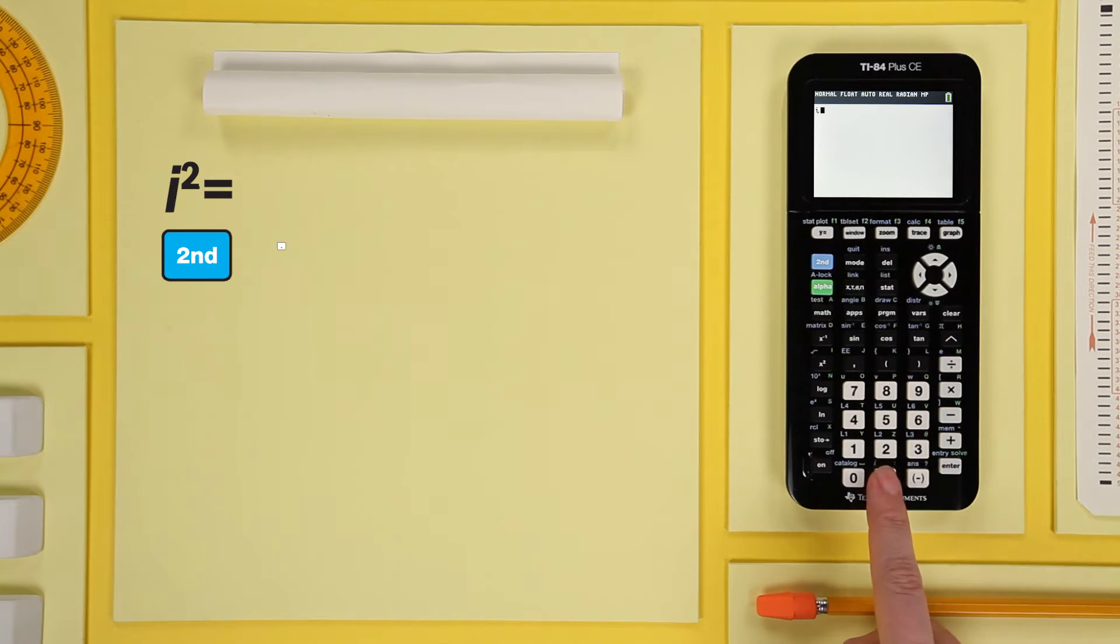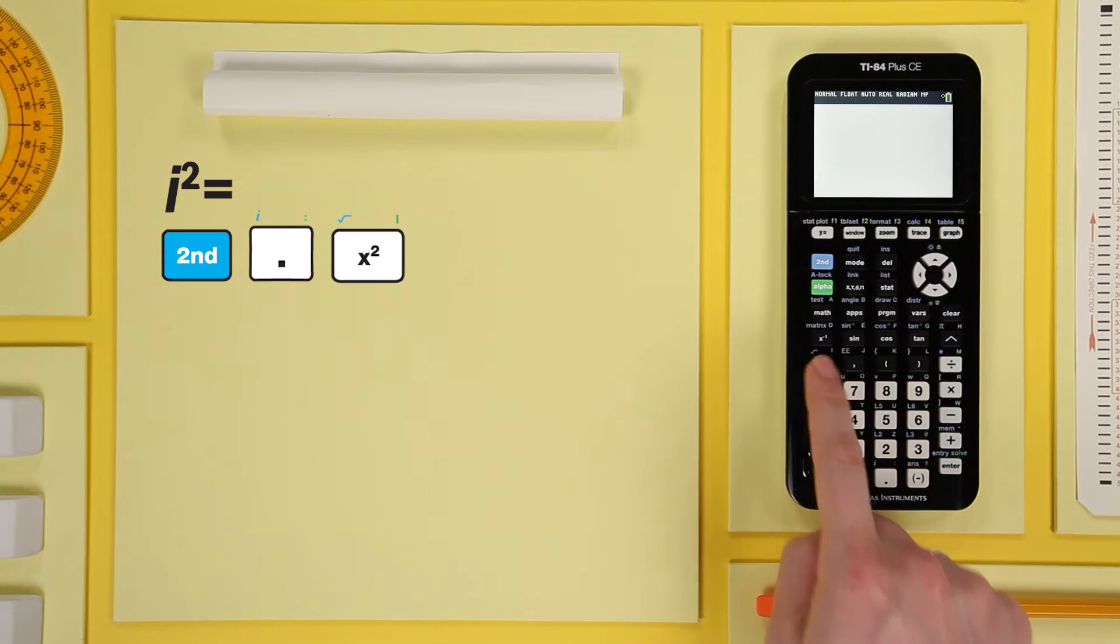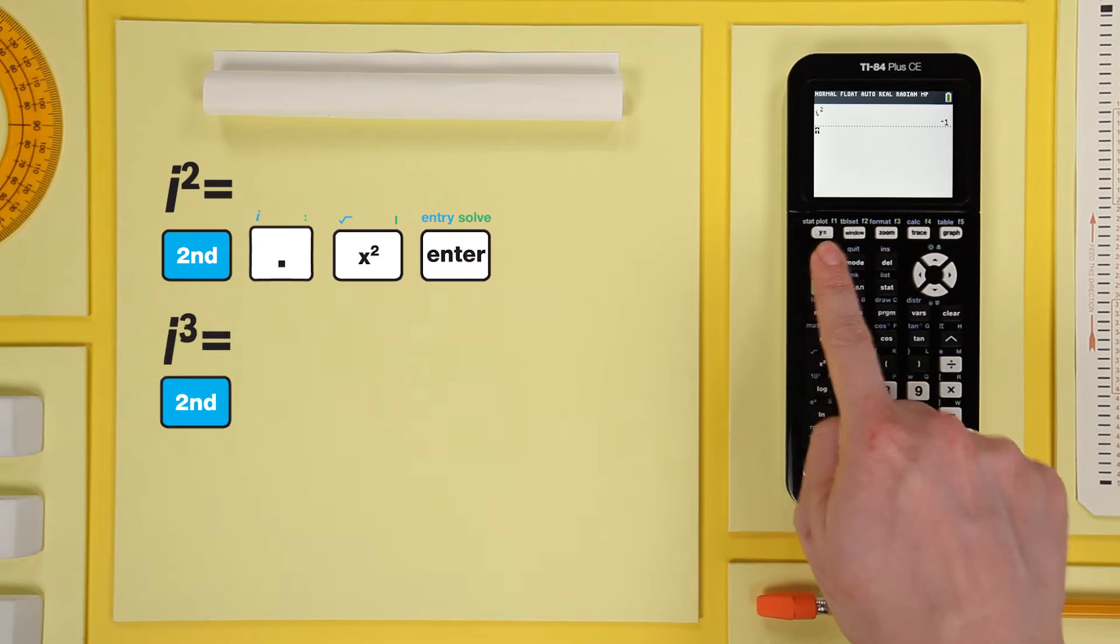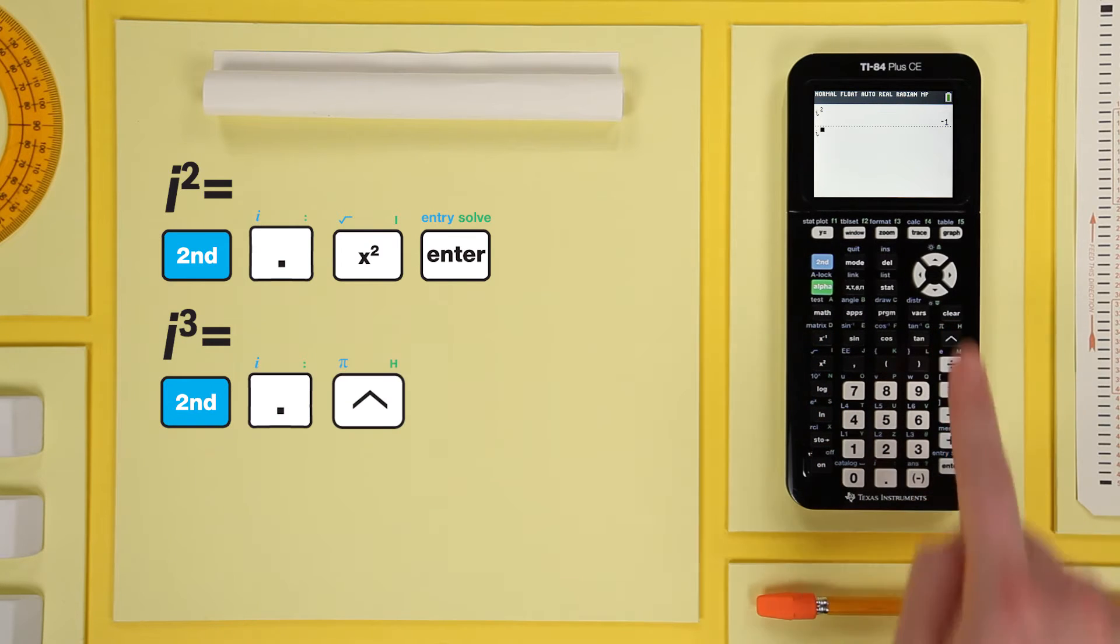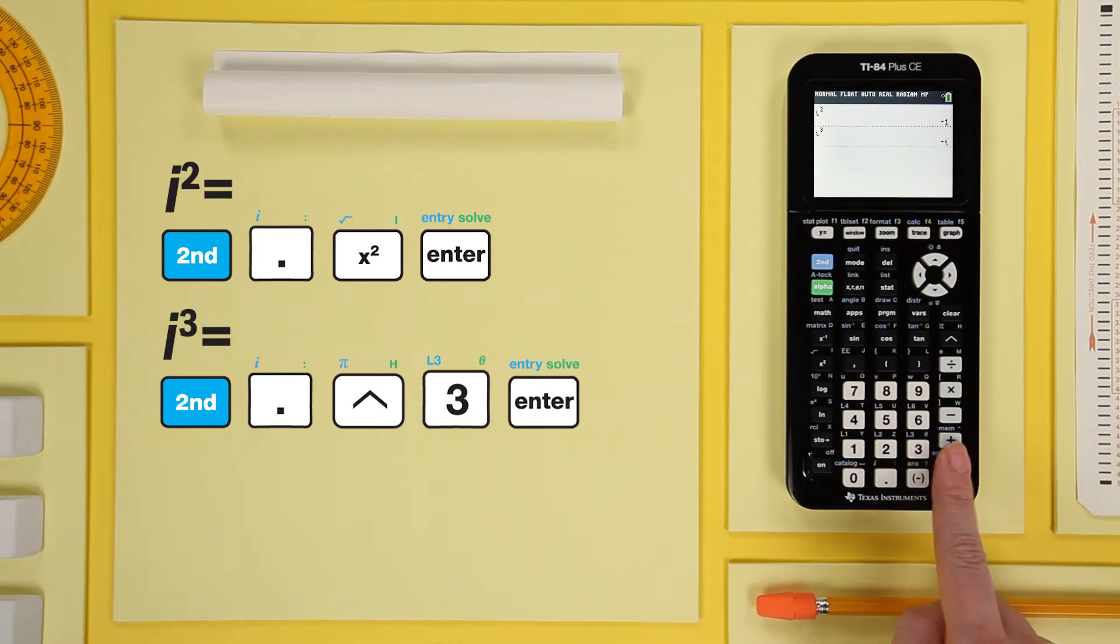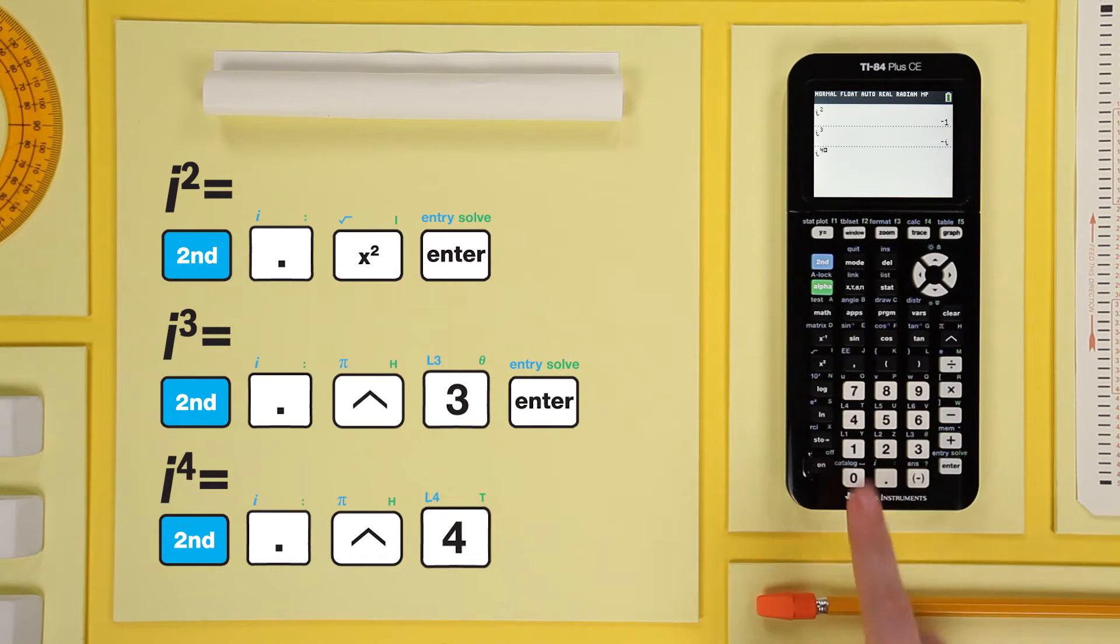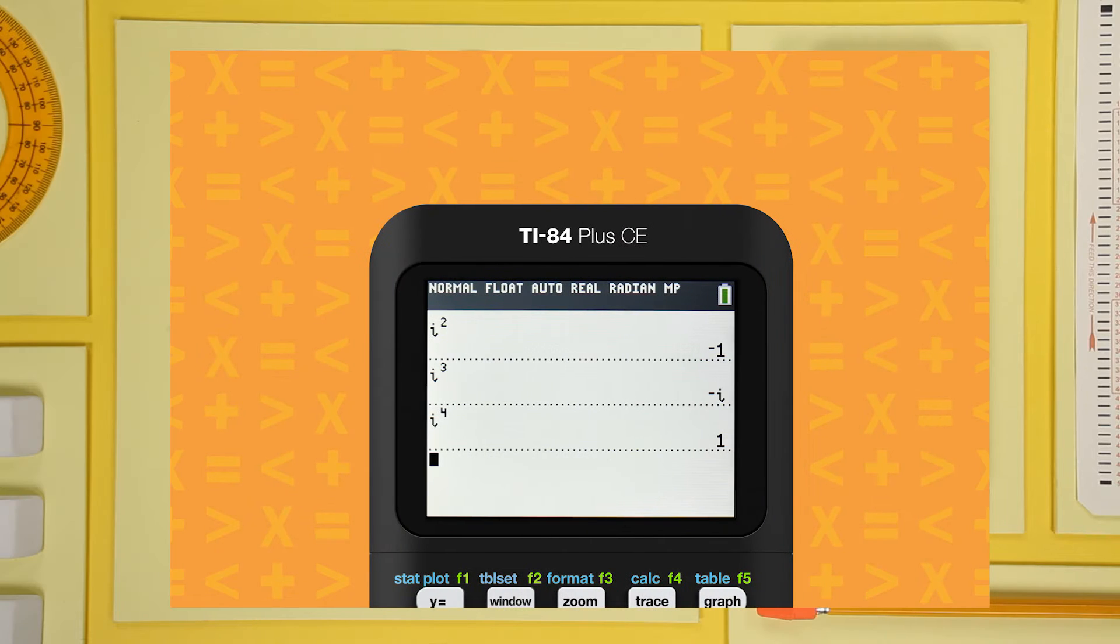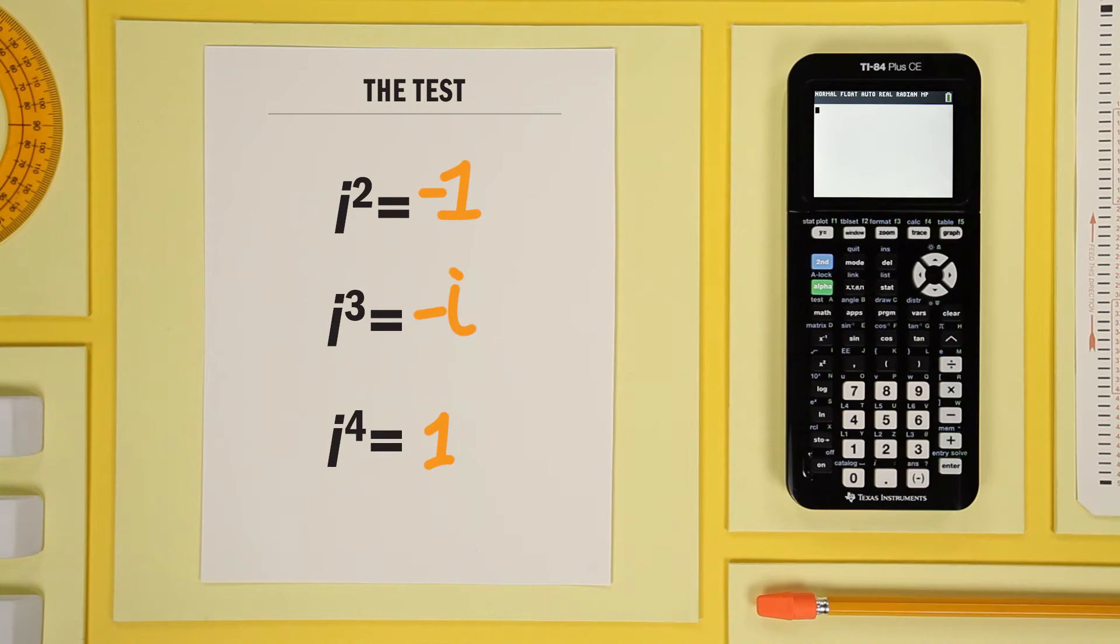Press 2nd, i, it's the blue command over the decimal point. You can square it, cube it, raise it to the fourth or even larger powers. And the result will be in simplified form. Got it? Good.